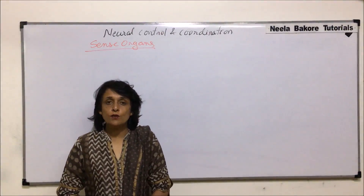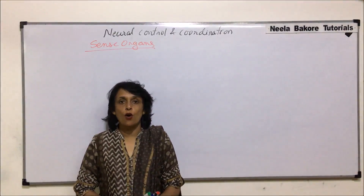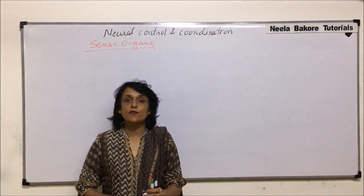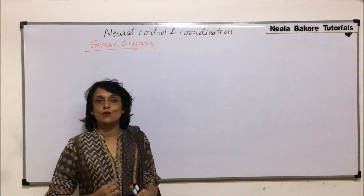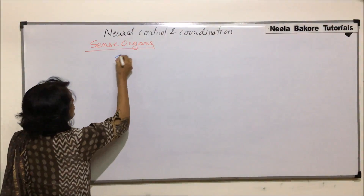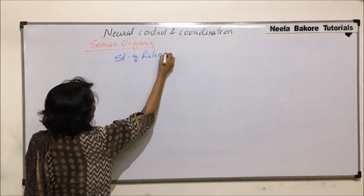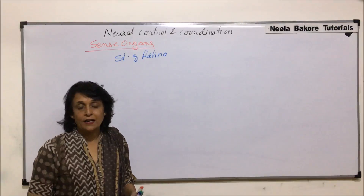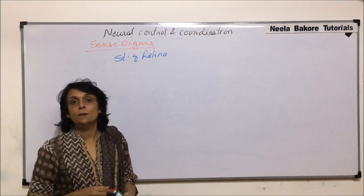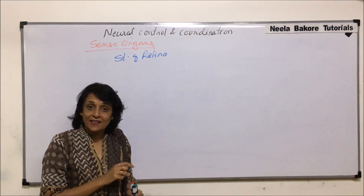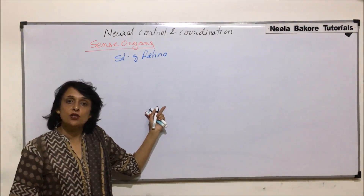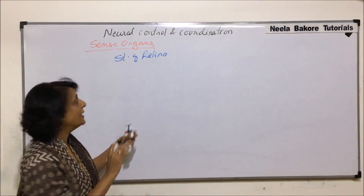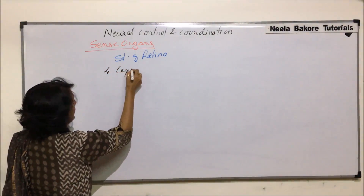In the previous videos we have seen the detailed structure of the human eye. Now we will talk about the structure of the retina, the layer which is responsible for perception of the stimulus of light and vision. When we talk of the retina, we are talking about the optical part. There is an optical part of retina, a ciliary part, and an iridial part. Here we are talking about the optical part. There are mainly four layers in the retina.